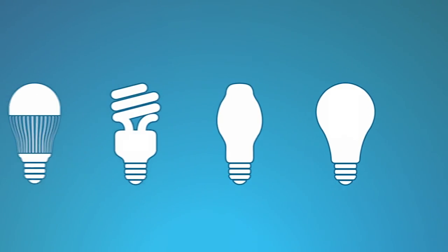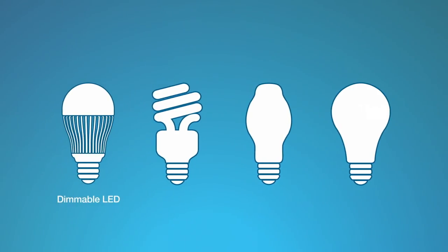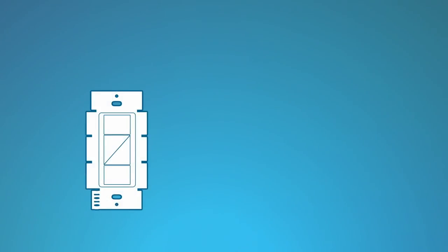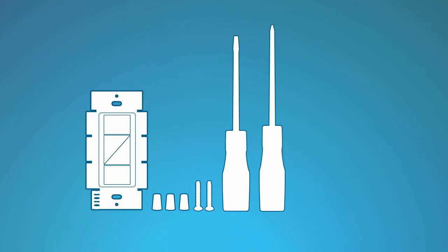Before you start, keep in mind that you can mix and match dimmable LEDs, dimmable compact fluorescent bulbs or CFLs, as well as halogen and incandescent light bulbs with Caseta Wireless Dimmers. For this installation, you'll need a Caseta Wireless In-Wall Dimmer, wire connectors and screws that came with the dimmer, a flat-head screwdriver, a Phillips-head screwdriver, and pliers.